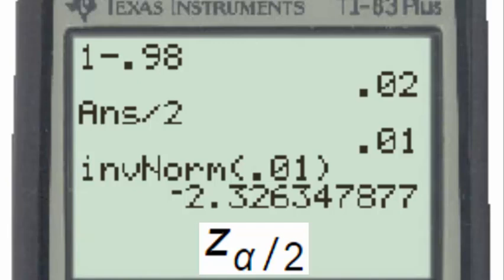z subscript alpha divided by 2 is the critical value for an alpha of 2%. If asked what that critical value was, we would answer with a positive 2.33. The z score is taken to two decimal places. And this is z subscript alpha divided by 2, which is indeed a z score.